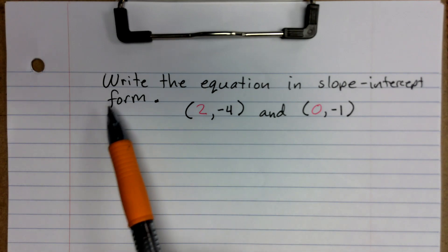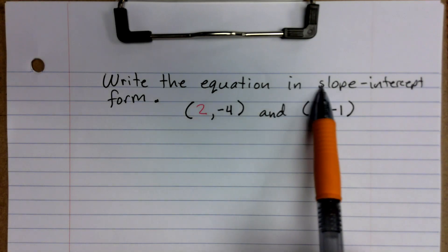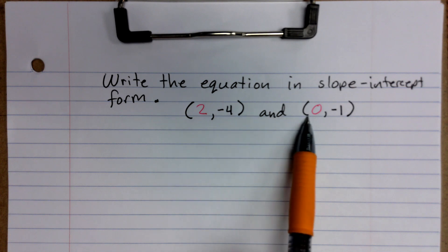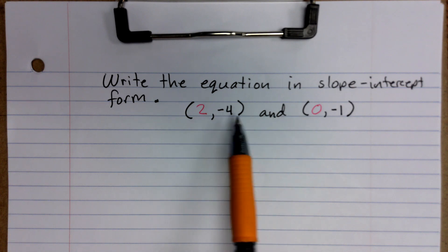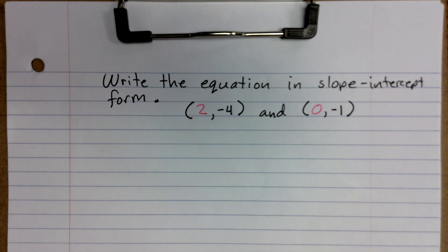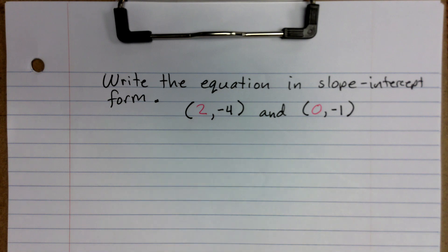In this problem, notice it's asking you to write the equation in slope-intercept form, and they're giving you a set of two ordered pairs. They didn't give us an equation, but with these two ordered pairs, we can find the slope, and we can use that slope and one of these ordered pairs to find the equation. We're going to have to use multiple formulas.